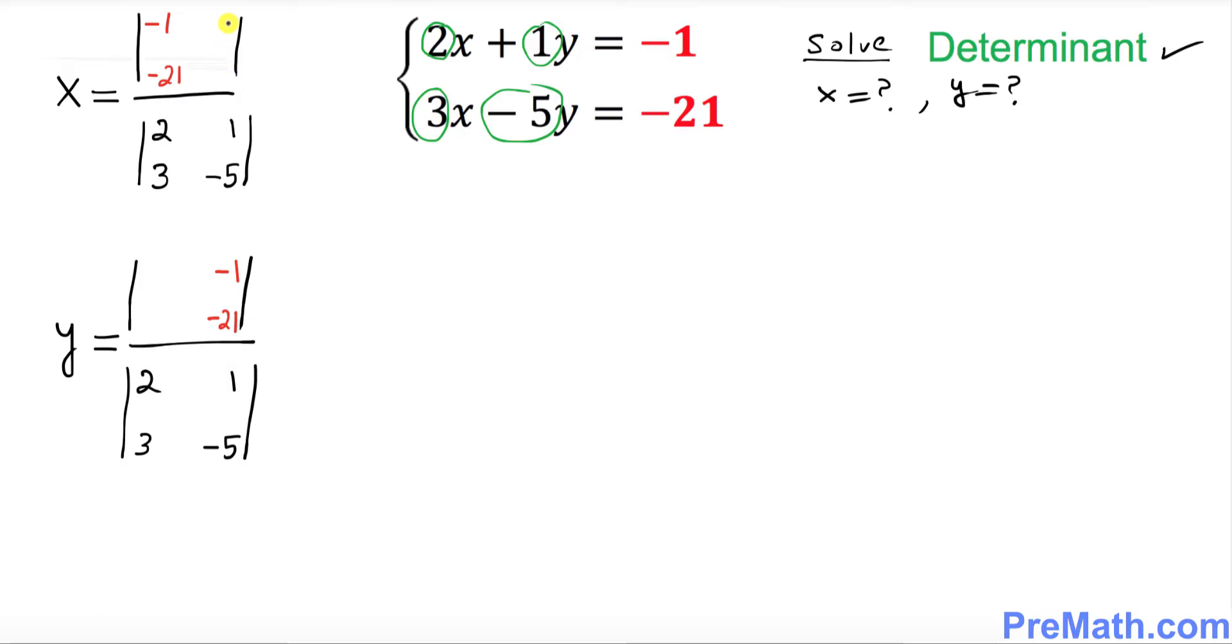Now we need to fill out this second column. Look at the numbers right underneath this column. What are the numbers below this empty column? This is 1, negative 5. I want you to push these numbers up. Copy and paste. This becomes 2 and 3. So we have nicely set up these x and y boxes. Now we're going to find the value of these determinants.